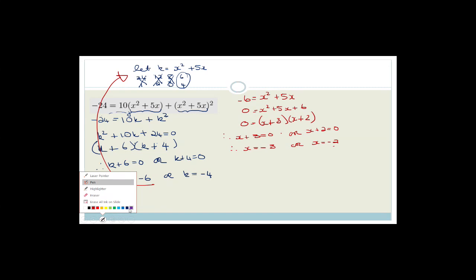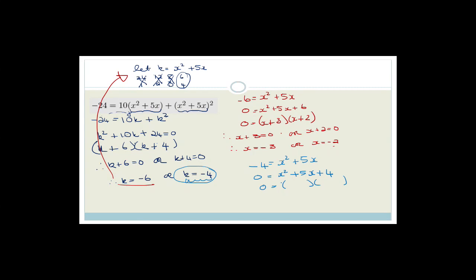We haven't finished because we haven't checked k equals negative 4. So negative 4 equals x squared plus 5x, giving 0 equals x squared plus 5x plus 4. The factors of x squared are x and x, both signs are plus, and factors of 4 that add to 5 are 4 and 1. Therefore x plus 4 equals 0 or x plus 1 equals 0, giving x equals negative 4 or x equals negative 1.